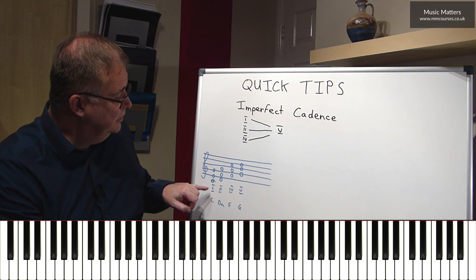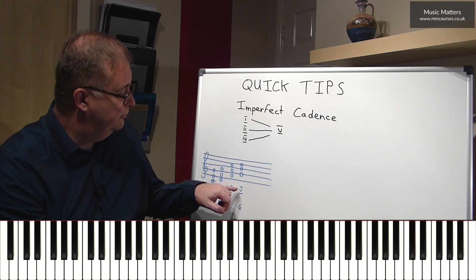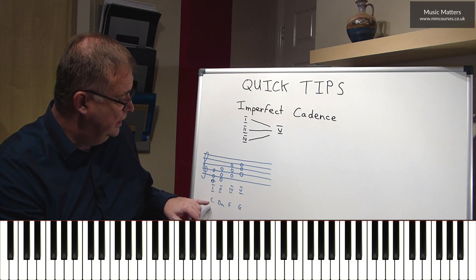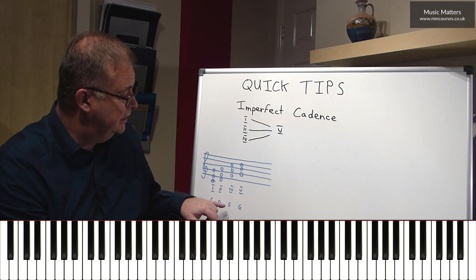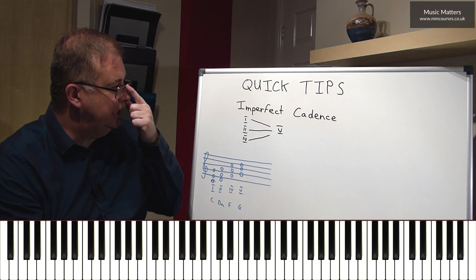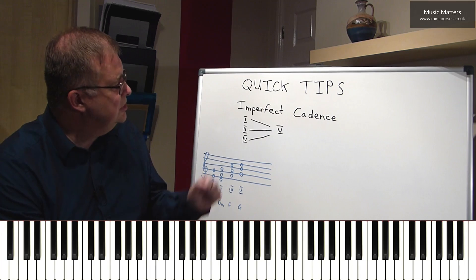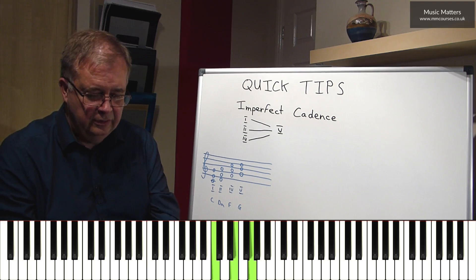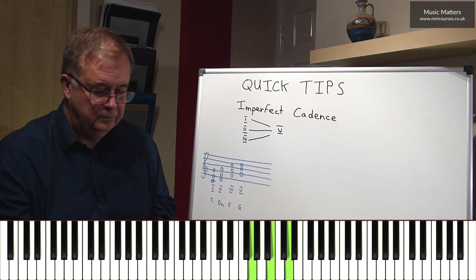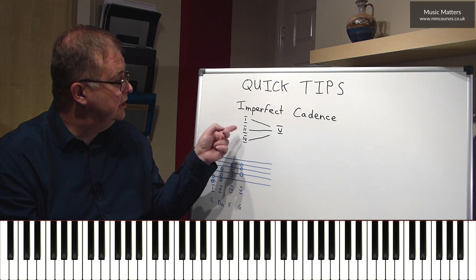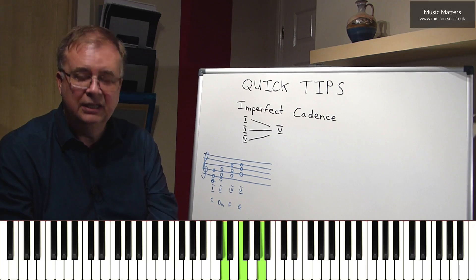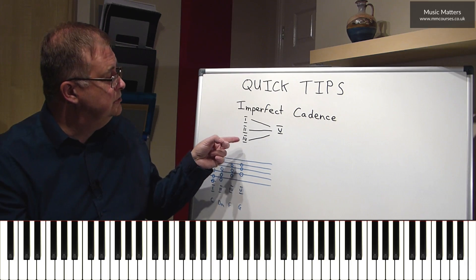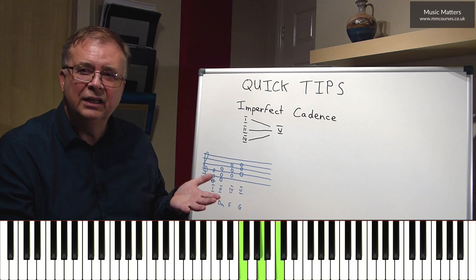So these are chord I, chord II, chord IV, and chord V — or you may prefer to call them a chord of C, a chord of D minor, a chord of F, and a chord of G. So I could have an imperfect cadence that goes I to V, or II to V, or IV to V.